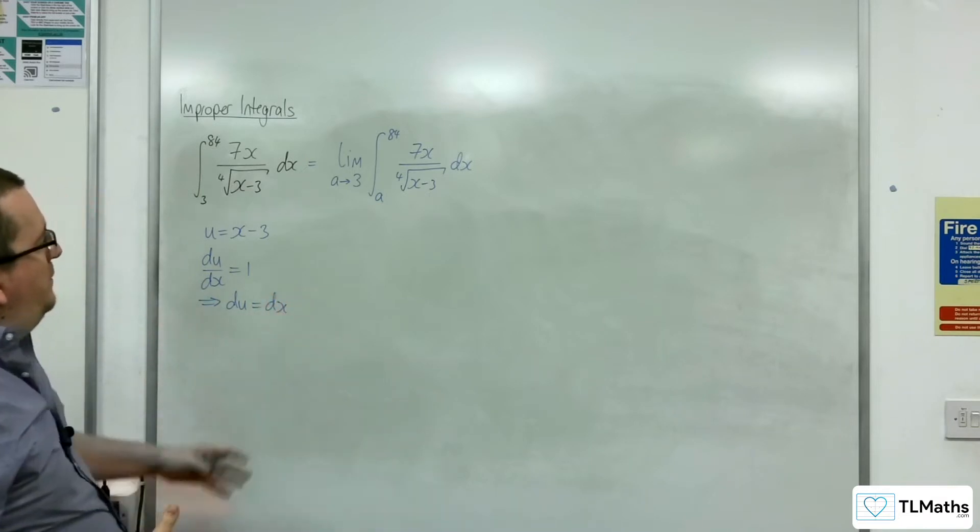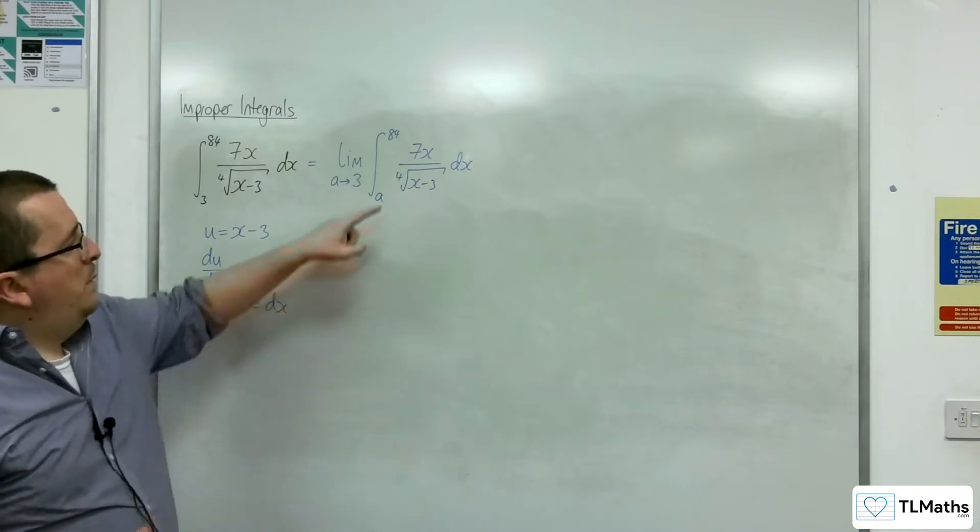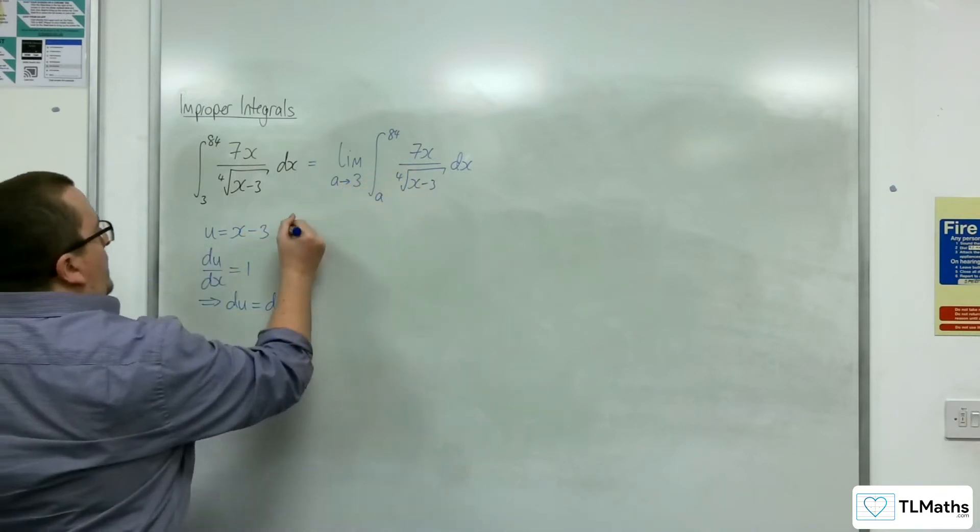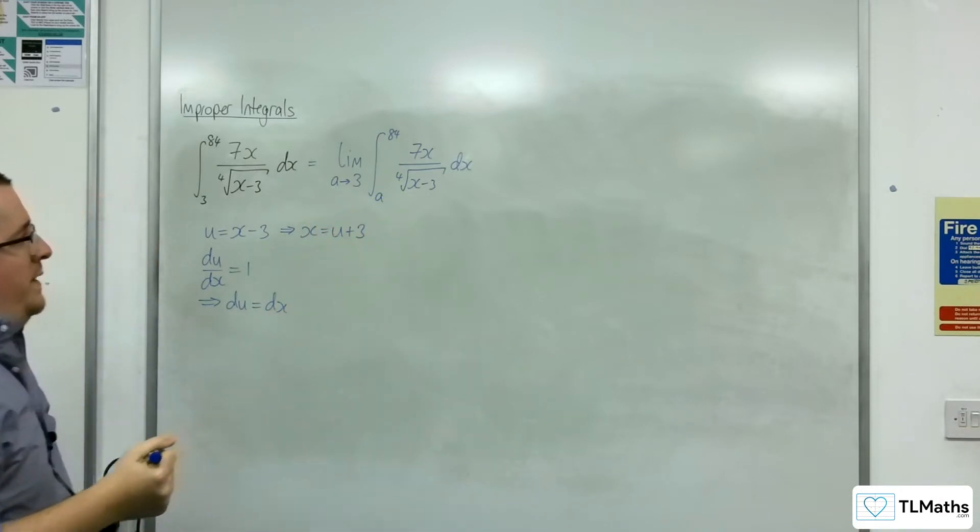So we have a replacement for the dx and a replacement for the x minus 3, but we've got the 7x in there. So I'm going to need to rearrange this to get x is equal to u plus 3 to replace out the x.